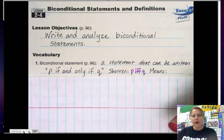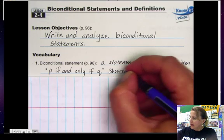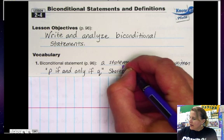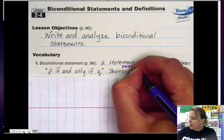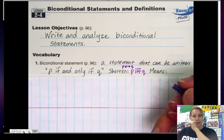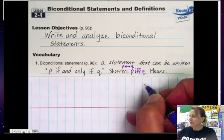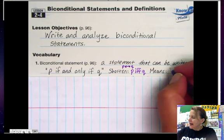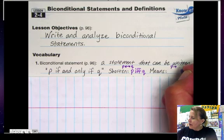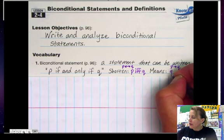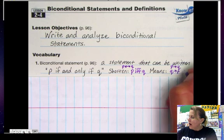or you could also write it P double arrow Q. You'll see both ways in the book and when I'm teaching. Now, what it means is that P arrow Q and Q arrow P are both true.